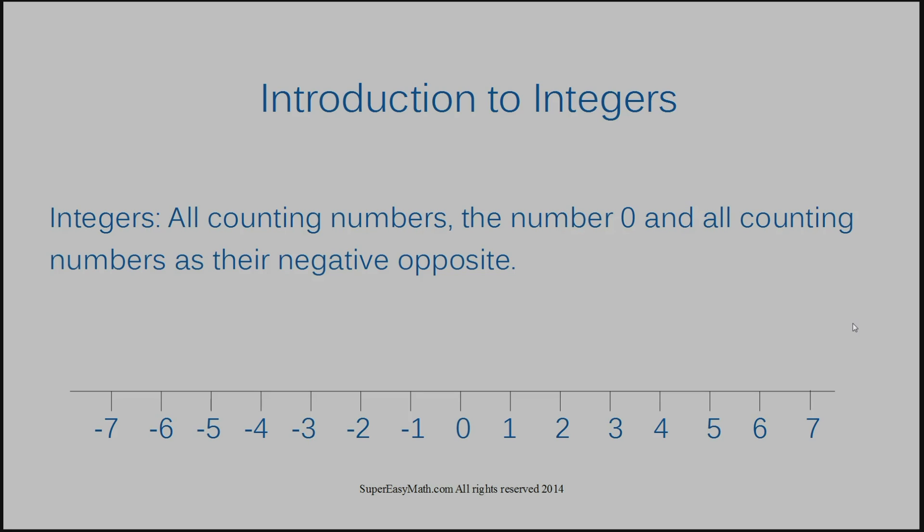So integers are counting numbers, the number zero, and then all those counting numbers but with a negative in front of it, which is that number's opposite — the negative opposite. So counting numbers on my number line that I have here are one, two, three, four, five, six, seven.